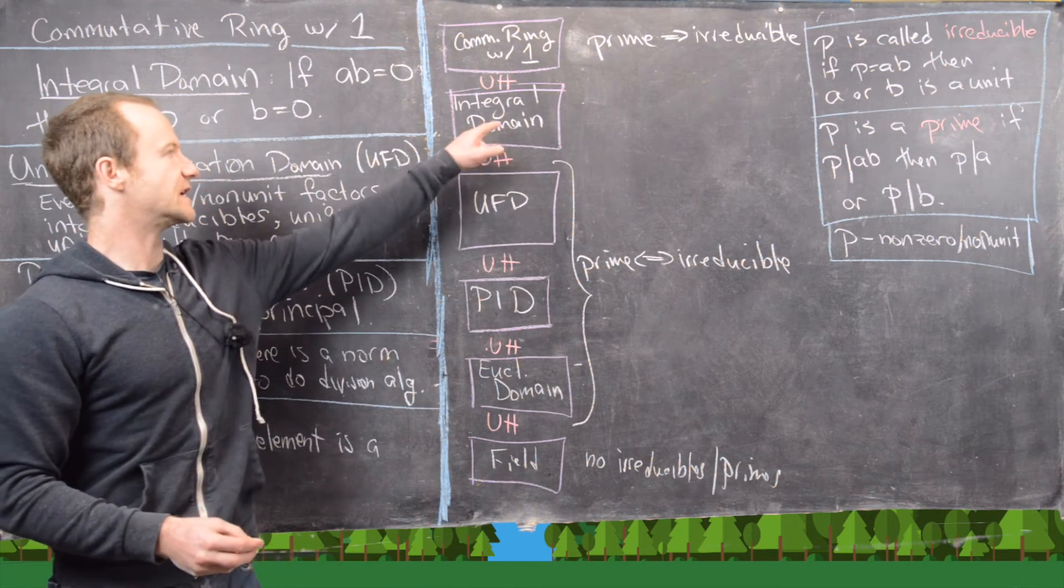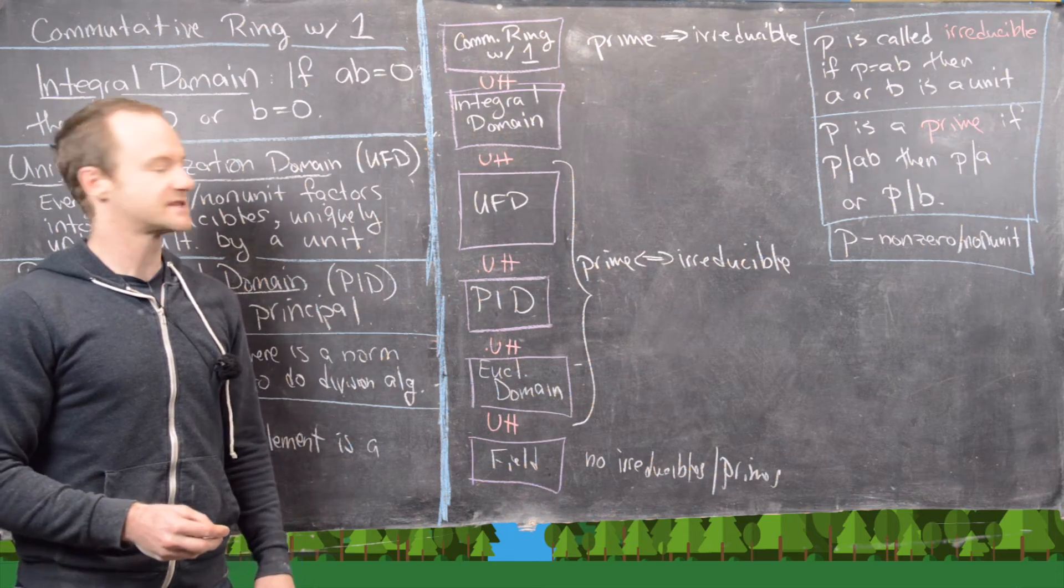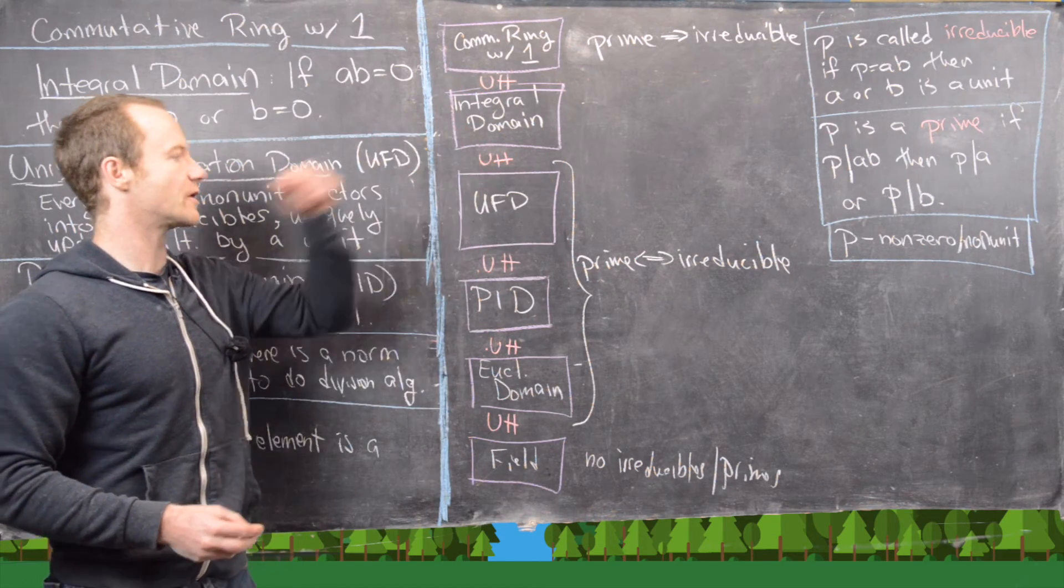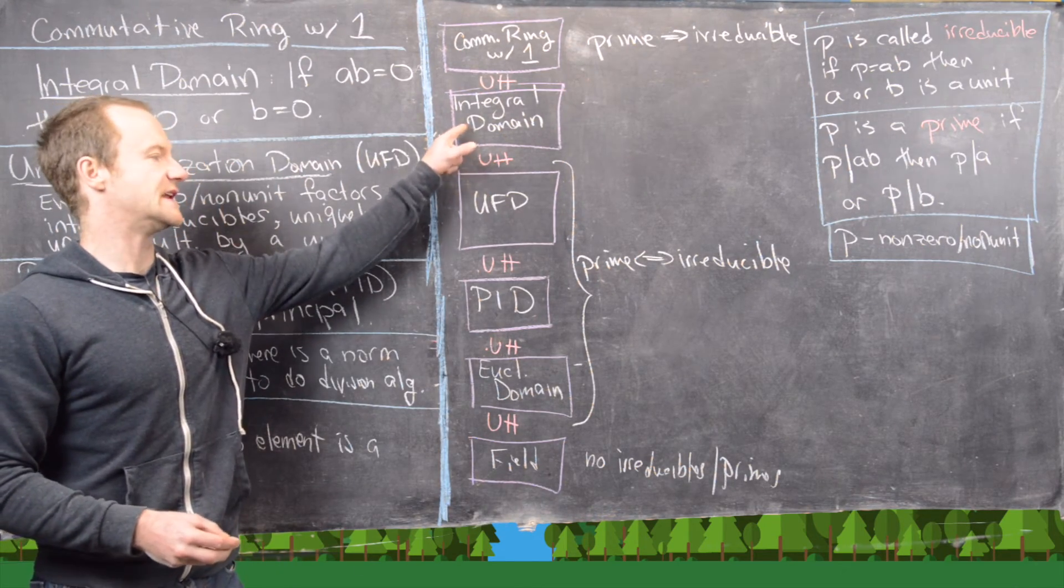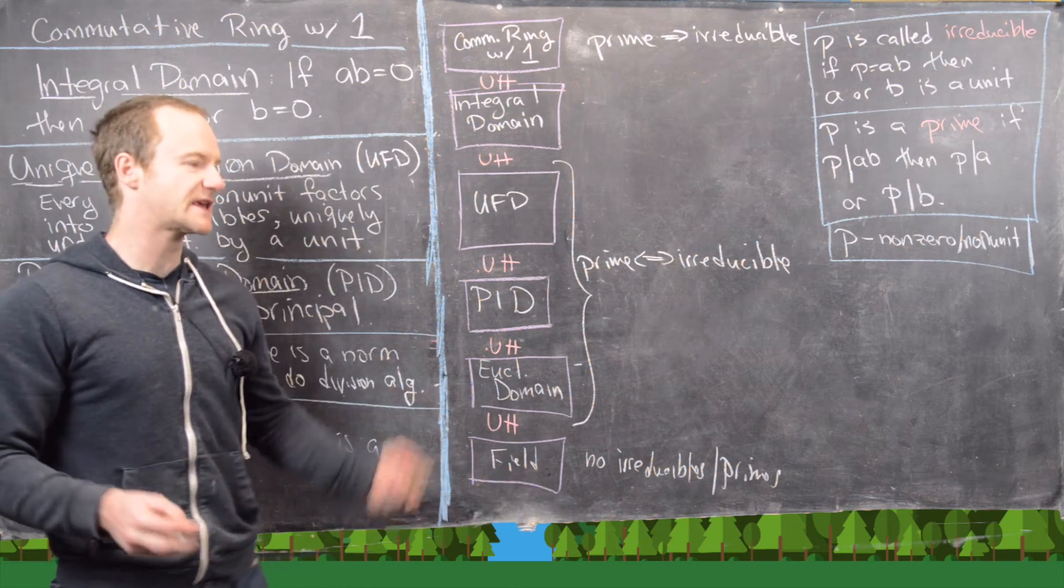And so that means up here, maybe there's something interesting going on where we can find an irreducible element that is not prime. And we can, and we can build that off of the example that we saw before.